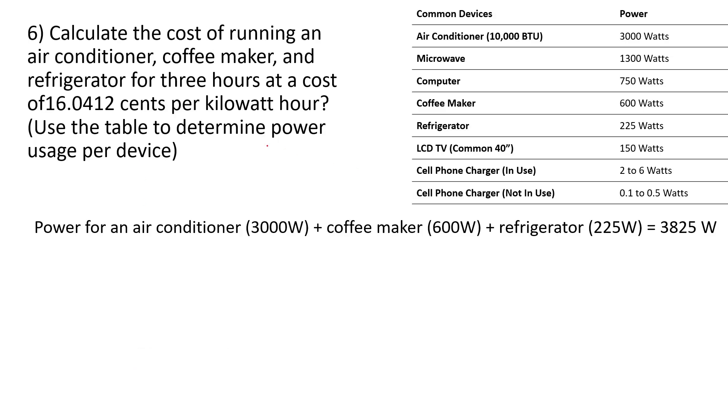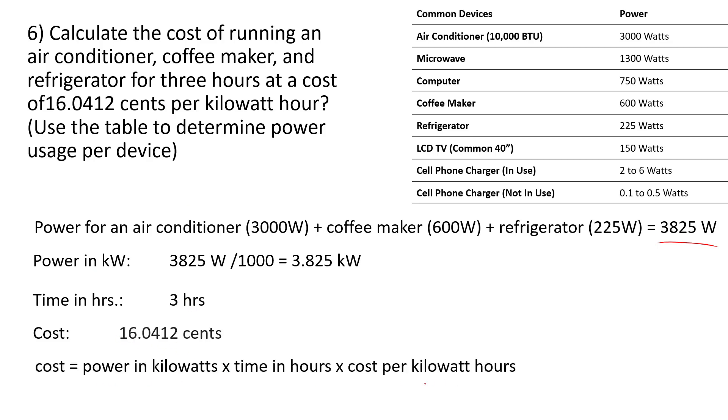Here's asking you to do a little bit more. You're running an air conditioner, a coffee maker, and a refrigerator. So you have to add the power of those up together, and we find out we're going to be running these three things at a wattage of 3,825 watts. Well, it's not in kilowatts, we have to divide by 1,000, we get 3.825 kilowatts. We are given hours, so we're going to stick with 3 hours. We're given a cost. Multiply the three together, and you're going to get, when you get to the answer, 184 cents. So that would be the cost of running an air conditioner, a coffee maker, and a refrigerator for three hours.